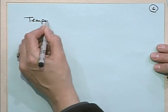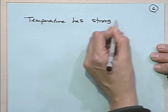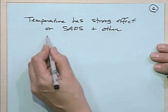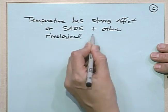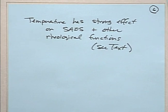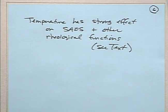To summarize: temperature has a strong effect on small amplitude oscillatory shear and other rheological functions. That was a brief tour through small amplitude oscillatory shear and G(t) step strain data. Now let's talk about large strain.